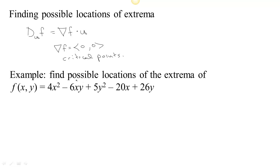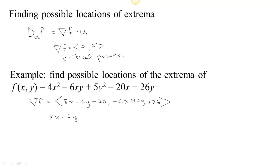Let's look at this example. We find the gradient of this function: we take the derivative with respect to x and get 8x minus 6y minus 20, and we take the derivative with respect to y and get negative 6x plus 10y plus 26. So if we want to find critical points, we need to figure out where that gradient is equal to zero. This is a system of two equations and two unknowns. If our function had three variables, we would have a system of three equations and three unknowns.